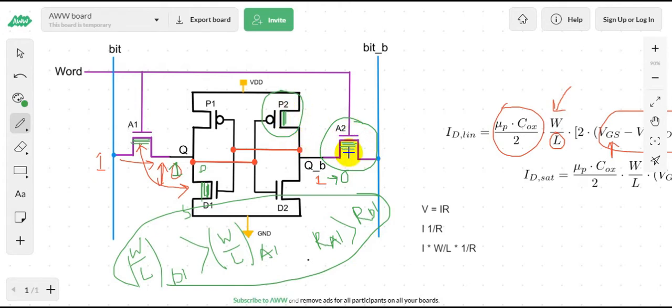So in this case for the write operation, the bit bar is 0 and the Q bar is 1. And to write 1 here, we need to make stronger the A2 transistor than the P2 transistor, because here the P2 transistor is trying to keep the node Q bar at 1.